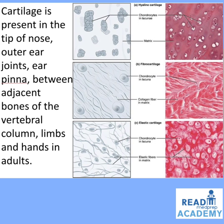Cartilage can be hyaline cartilage, where chondrocytes are present in the lacunae with abundant matrix; fibrocartilage, where fibrous tissue is in excess, chondrocytes are in lacunae, and collagen fibers are present in the matrix; or elastic cartilage, which is made up of a large number of elastic fibers with chondrocytes in lacunae.